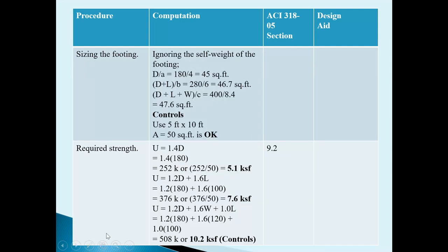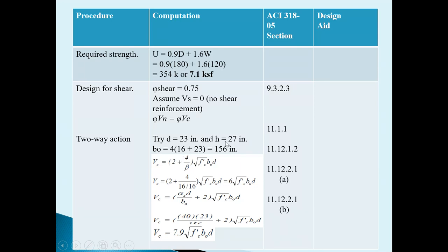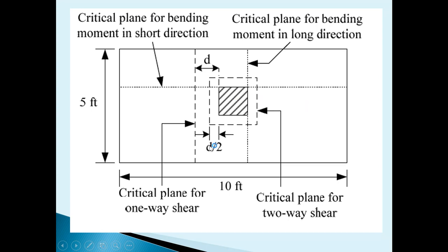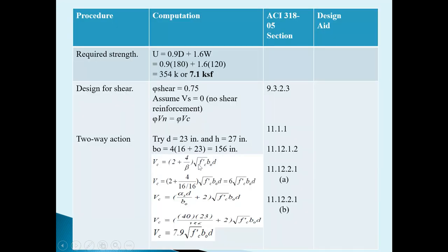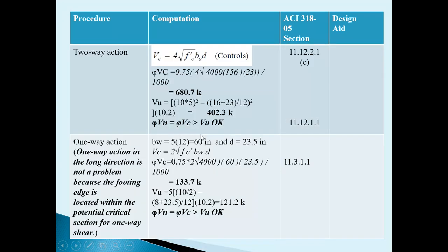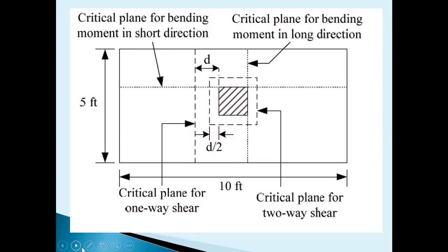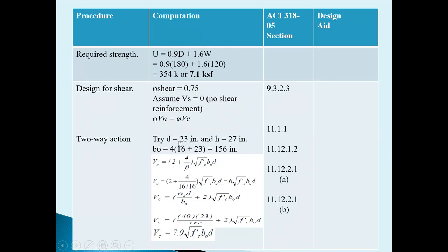We are trying D = 23 inches, so the total thickness H = 27 inches. We calculate the two-way shear perimeter and check the two-way shear with these assumed dimensions. If this is failing in shear then we have to revise these values.